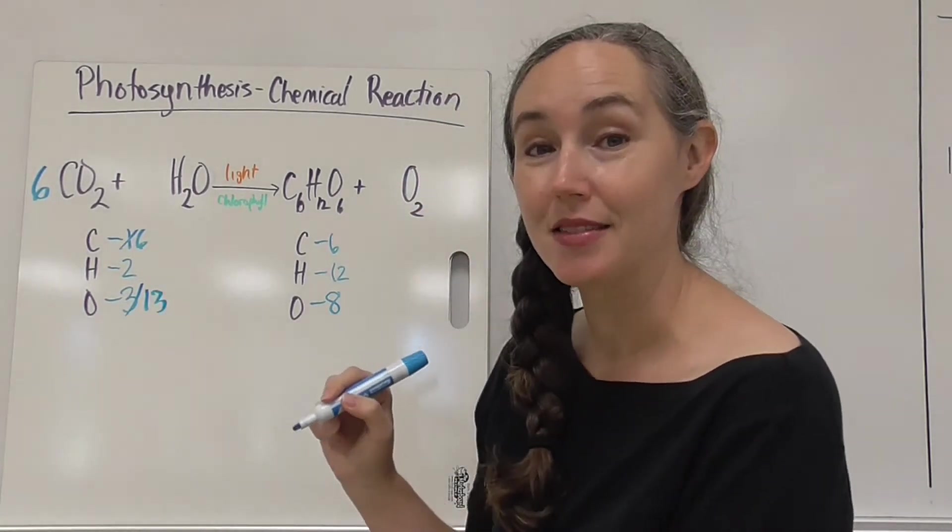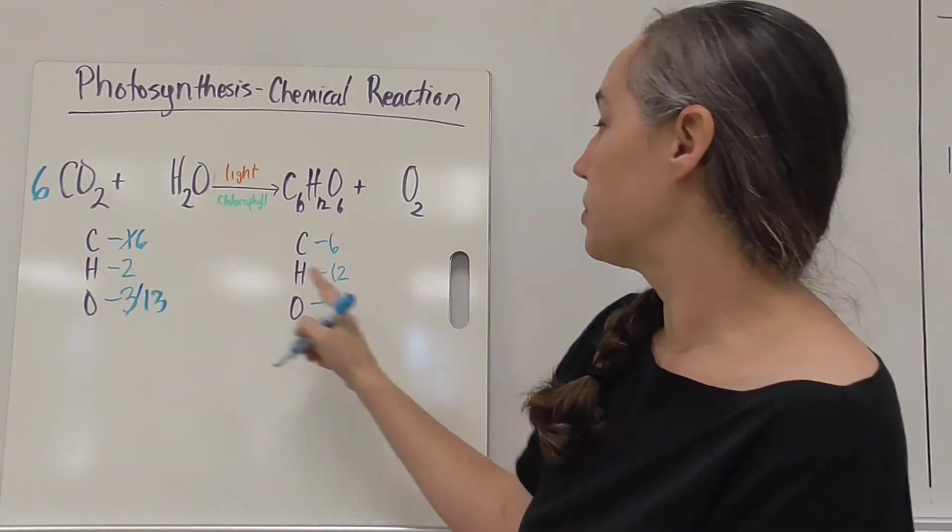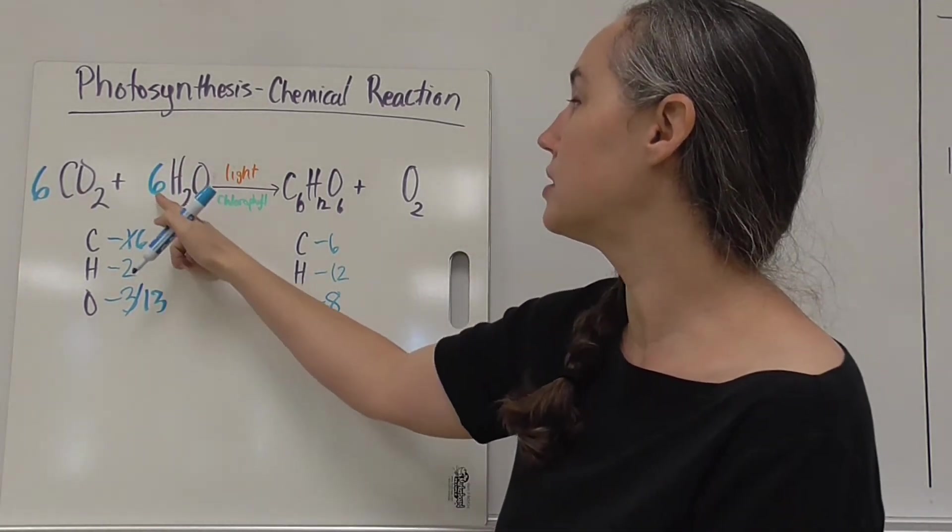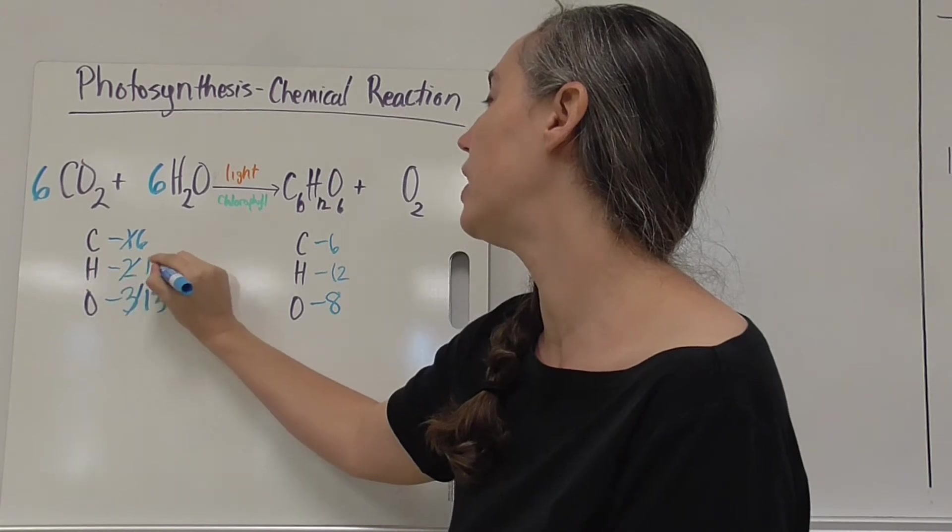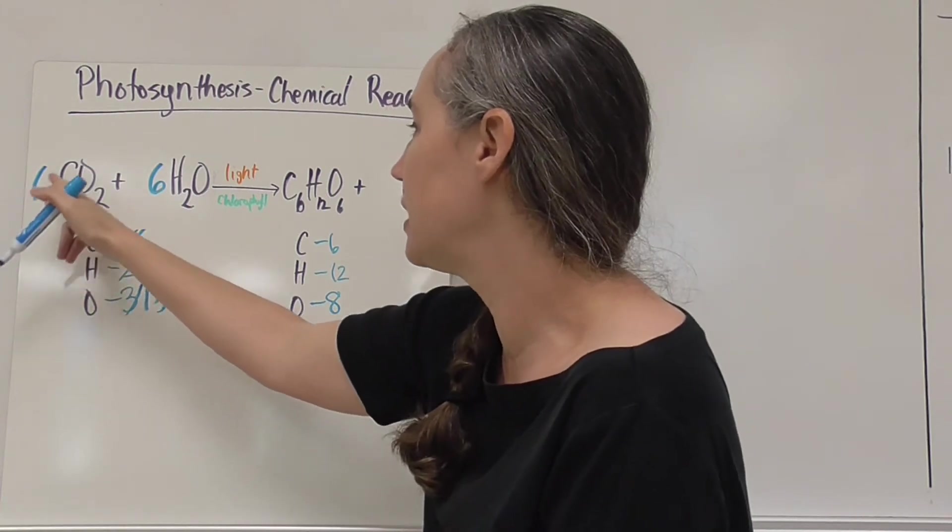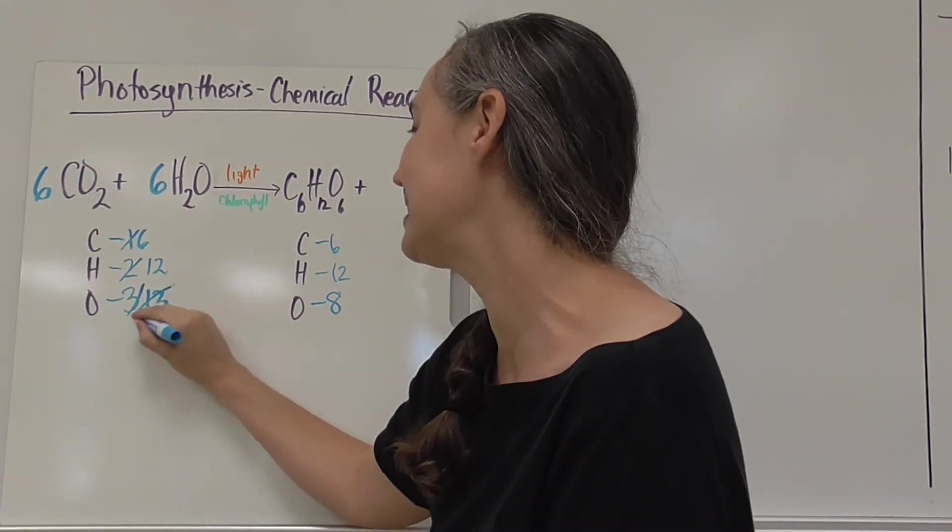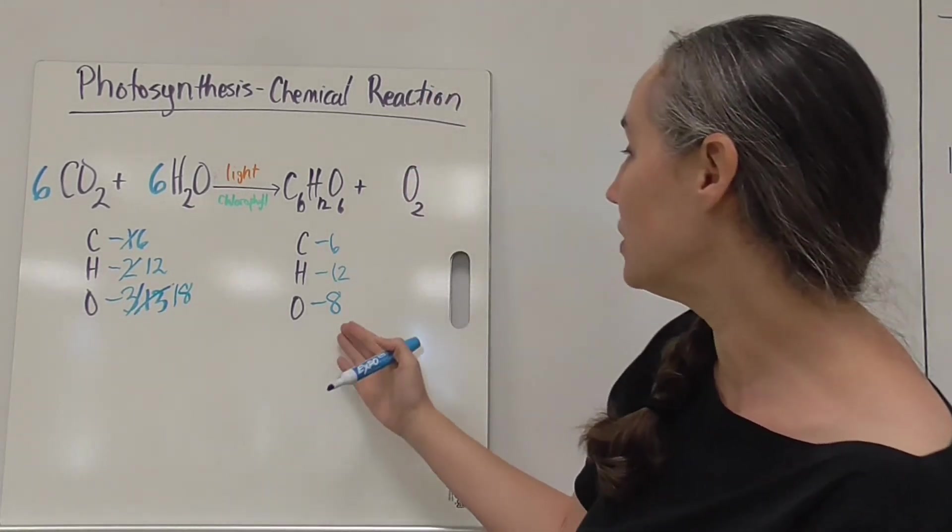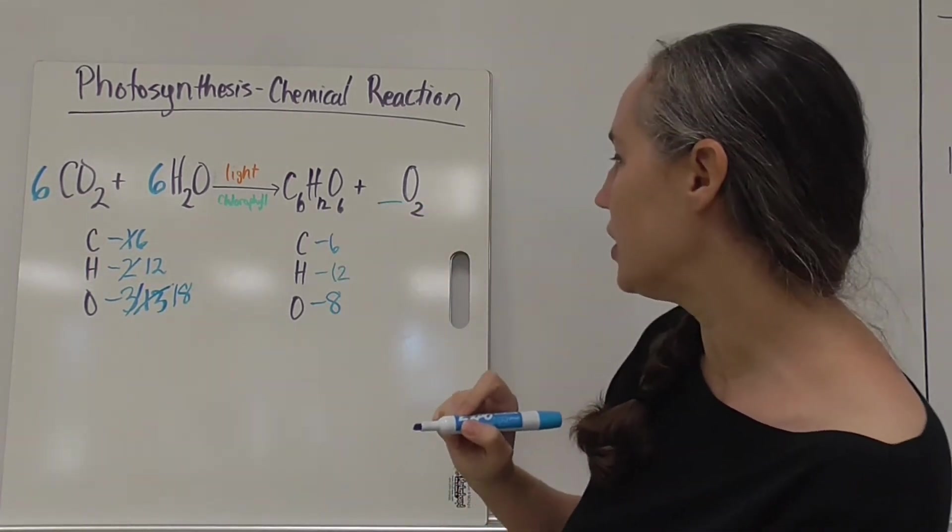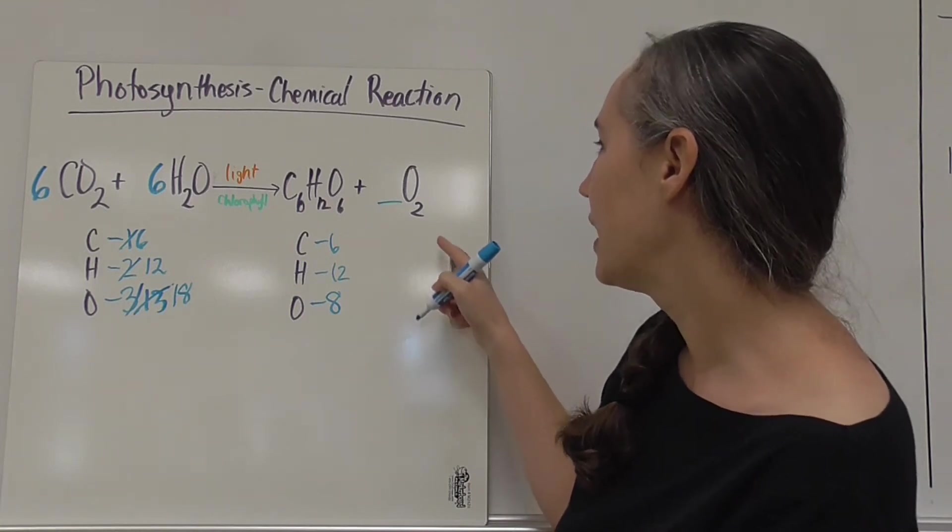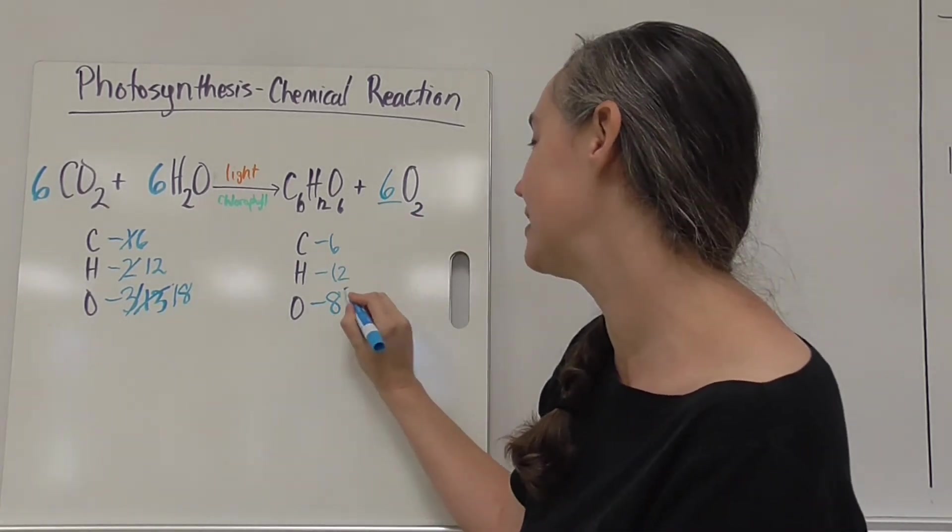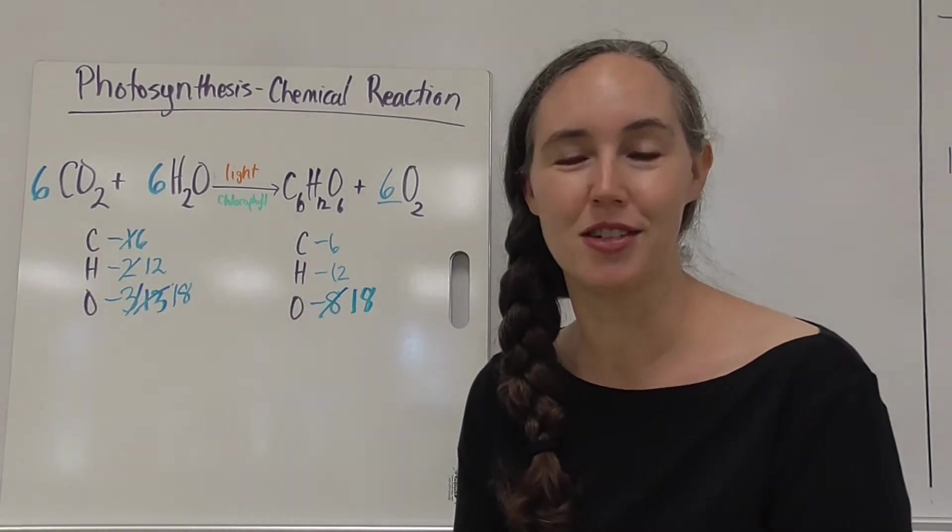Now I can easily balance my hydrogens by putting a six right here as the coefficient in front of water because six times two is 12 and now my hydrogens are balanced but my oxygens are still off. Right now I've got six times two is 12 plus six is 18 oxygens on the reactant side but only eight over here. So is there something I could put right here to balance them out? And if I put a six here that gives me 12 oxygen atoms right here plus six is 18. And now my equation is balanced.